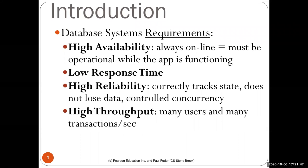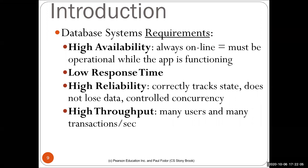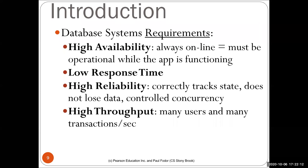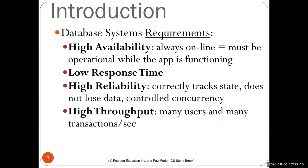What are the requirements for a database system? First, it has to be always online and highly available — operational while apps using it are functioning. It must have low response time; nobody will wait even seconds for a response. It has to be highly reliable, correctly track state and updates, and not lose data. It should work concurrently with high throughput, since many users imply many transactions per second.